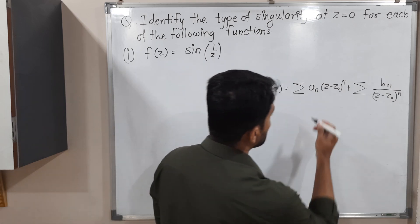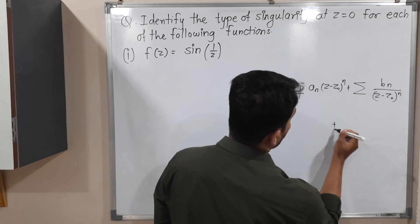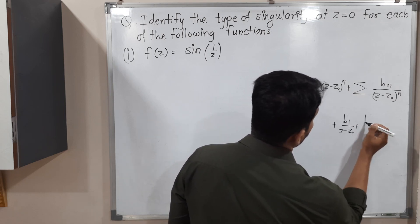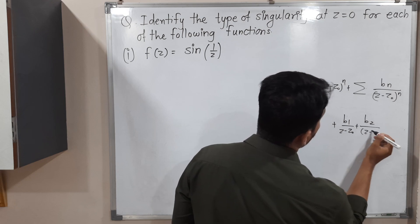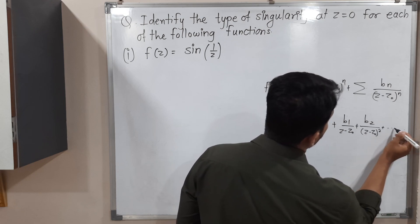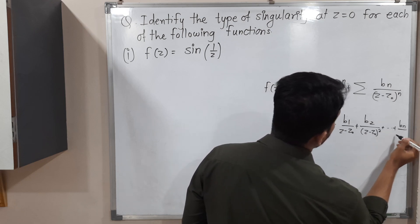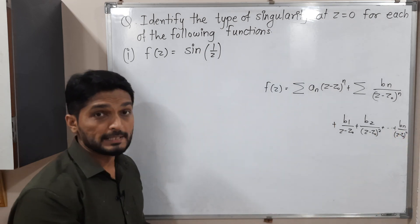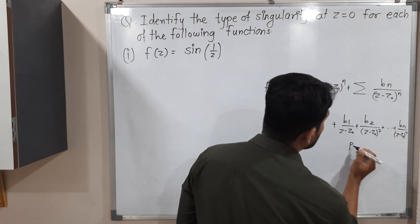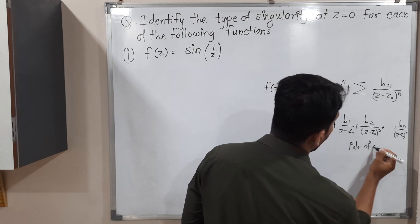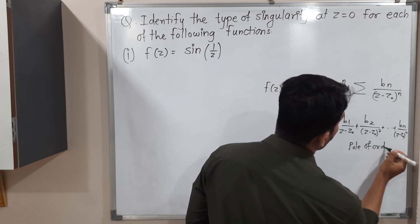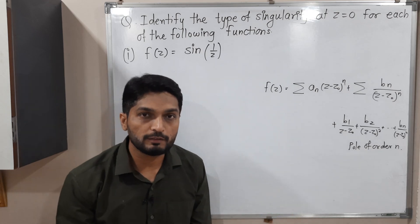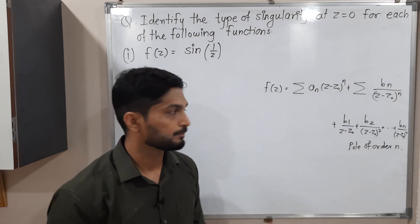In some cases, the analytic part will be as it is, but in the principal part we have a finite number of terms — the last term is b_n, and after that all terms are zero. So we have just a finite number of terms in the principal part. In that case, we say it is a pole of order n. So if we have a finite number of terms in the principal part, then it is a pole of order n.